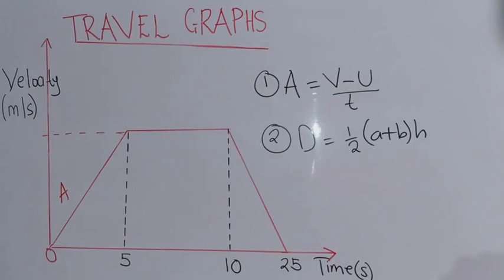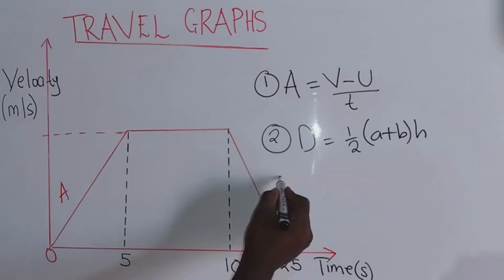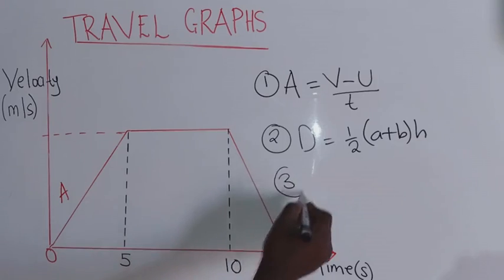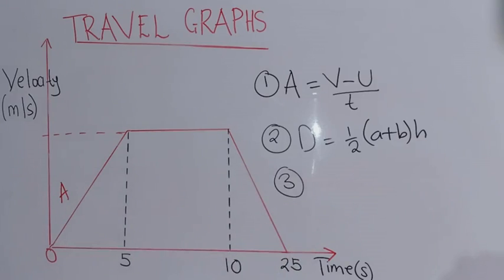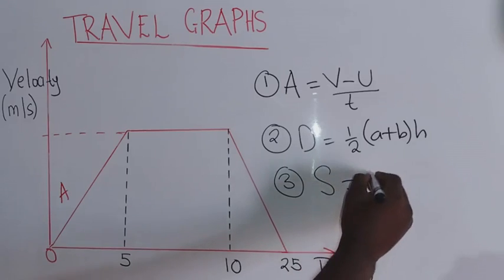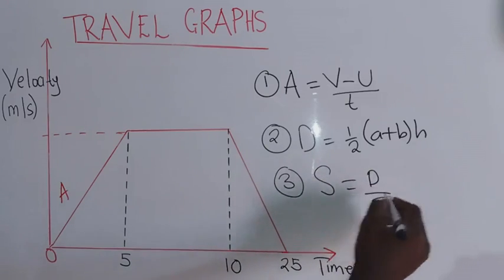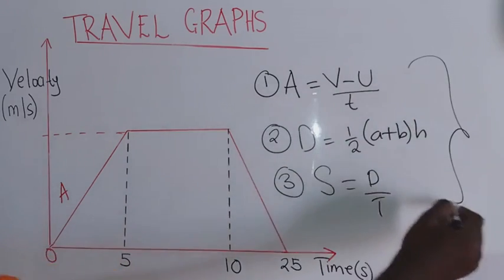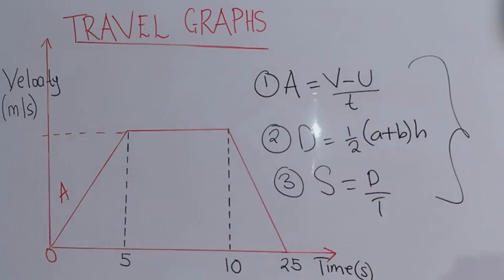Apart from that, there is another formula. They can ask you to find the speed of the journey. The formula for speed is: speed equals distance over time. Make sure you take note of those three formulas. Now let us look at an example of how we can apply these formulas.